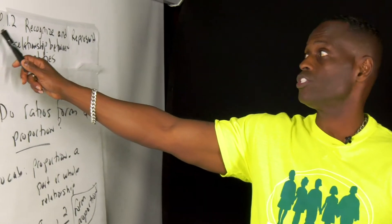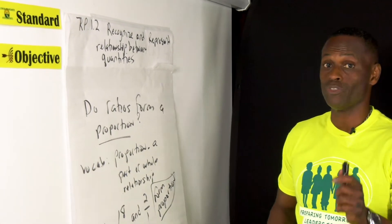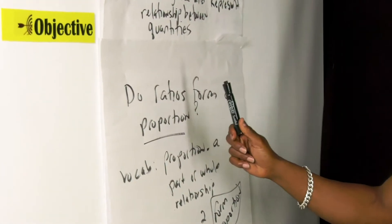And one of the areas we're going to cover is ratio and proportion 1.2: recognize and represent relationship between quantities. In this particular substandard, you're trying to understand whether or not ratios form a proportion.